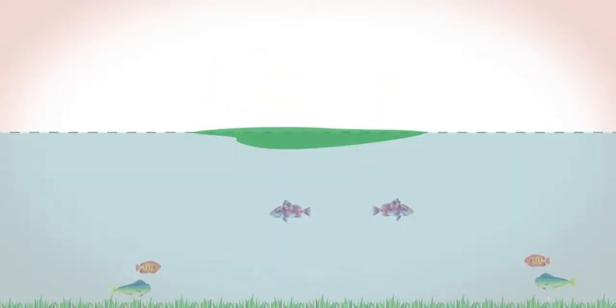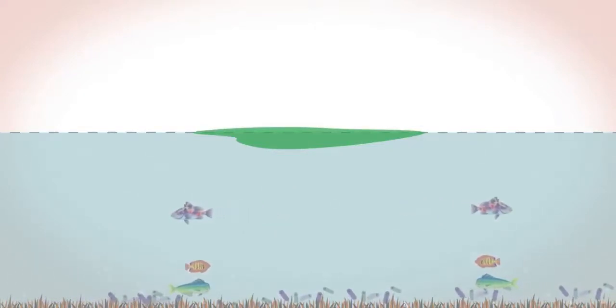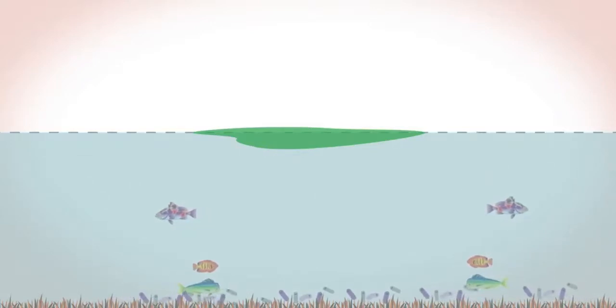The fertilizers cause algae to grow very fast forming a mat on the lake surface. This blocks sunlight from the vegetation deeper down which dies. Bacteria then feed off the dying vegetation and use up the remaining oxygen supply. Once the oxygen has gone all animal life dies, the lake ecosystem is destroyed.